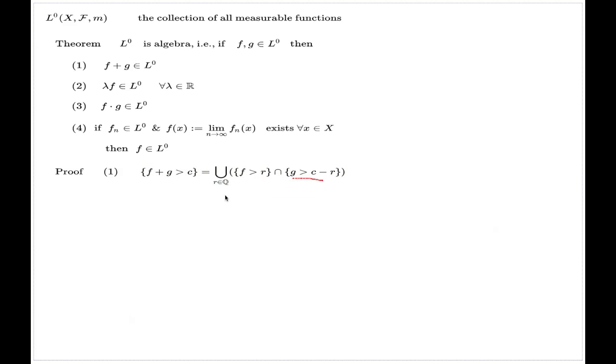Let's just see why we have such an identity. One side embedding is easy. If you have an element from the right hand side, so a point x such that f bigger than r and g bigger than c minus r, just adding up these two inequalities gives this inequality, that's where we have the left hand side.